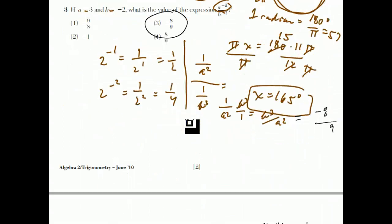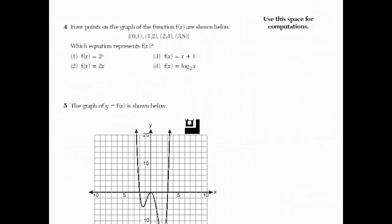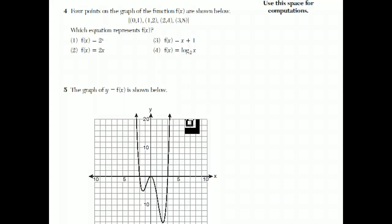Okay, well, I don't know why my eraser is not working, but I'll continue just like you should when you get the real test. Question 4. Four points on the graph of the function are described here: 0, 1; 1, 2; 2, 4; 3, 8. They want to know what equation represents f of x.